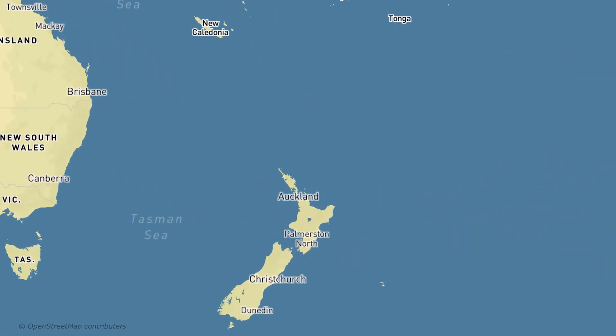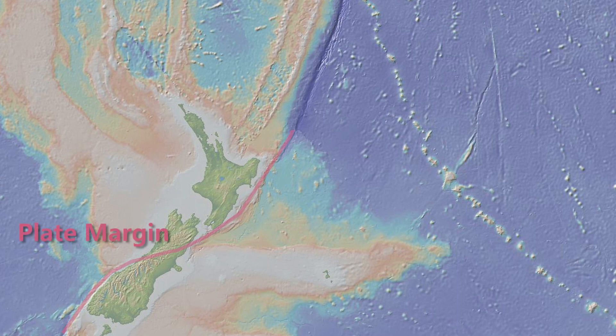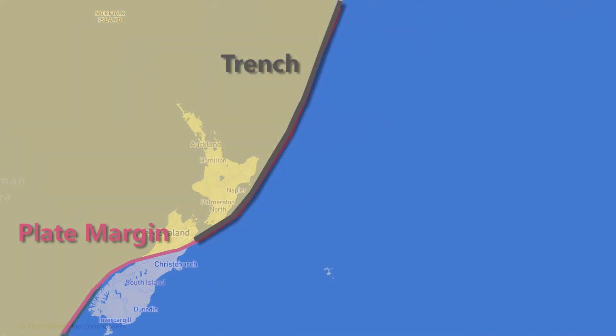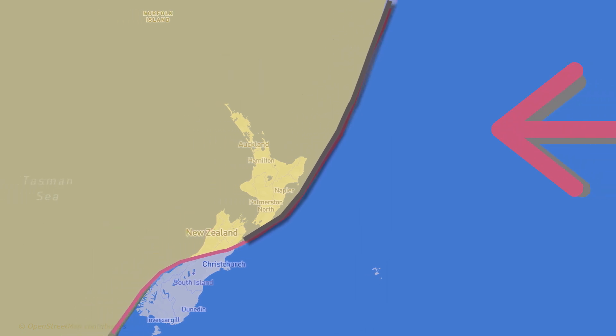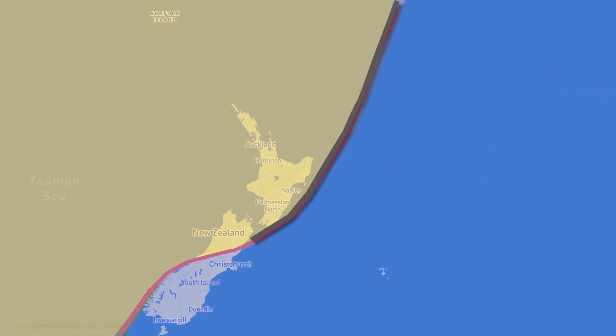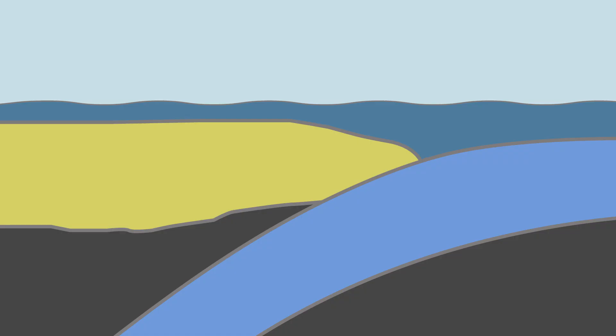In this region, there is a deep trench where the Pacific Plate sinks beneath the Australian Plate. The Pacific Plate moves westward towards the Australian Plate at a rate of about 60 millimeters per year. This is about the same length as your little finger. This sinking, or subducting, of the Pacific Plate is not very smooth, and so the convergence of the plates builds up stress.